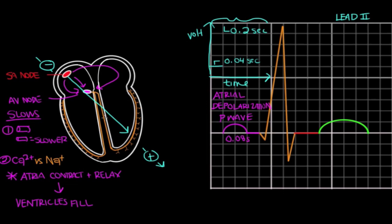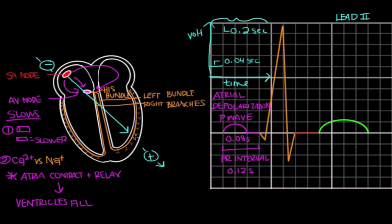This all happens before ventricular depolarization. On the EKG, the time it takes from the beginning of atrial depolarization all the way up until ventricular depolarization is seen as the PR interval. The PR interval is typically 0.12 seconds or 3 boxes, and it shouldn't ever be longer than 0.2 seconds or something's wrong. The signal then travels from the AV node to the His bundle, where conduction starts moving rather quickly. The His bundle bifurcates into the left and right bundle branches, and these branches branch into terminal Purkinje fibers.